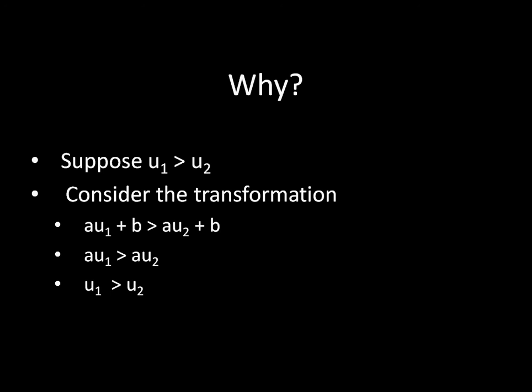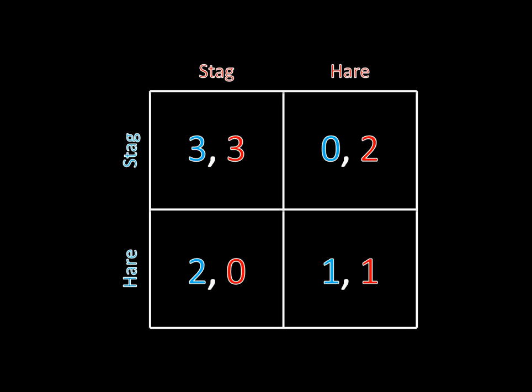So there are multiple ways of representing any one game. Take the original stag hunt: if we apply a positive affine transformation to player one with a equal to two and b equal to zero, we simply double player one's payoffs — three becomes six, two becomes four, one becomes two, and zero stays zero. This is exactly the same game as before; we've just found a different way to represent the same preferences.